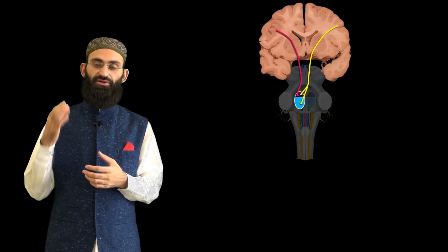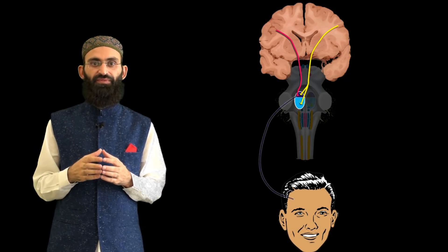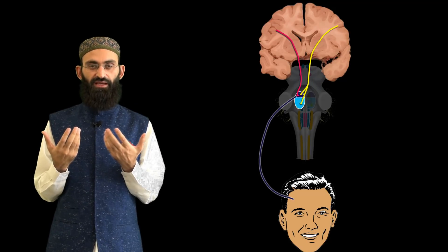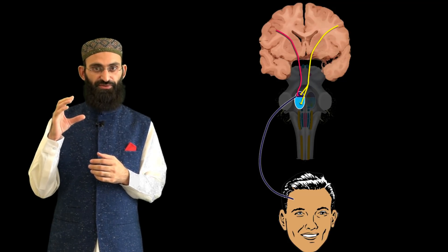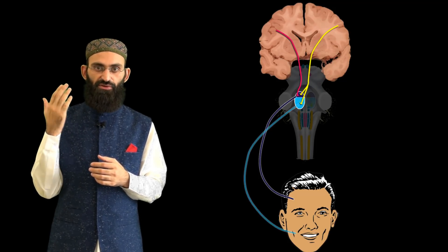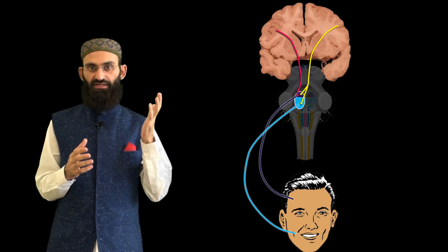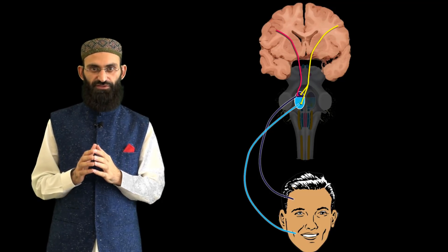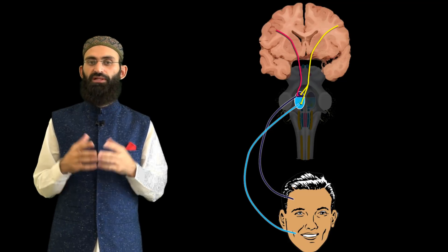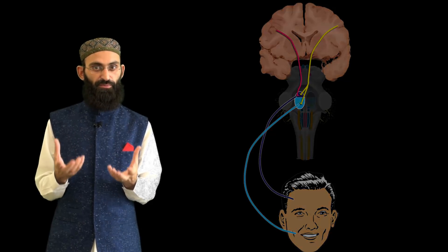Consider the right facial nucleus: the upper part, which innervates the frontalis muscle, gets its corticobulbar supply from both sides. The lower half, which innervates the lower half of the face, gets its innervation only from the left side — so only the left corticobulbar tract innervates the lower half of the facial nucleus. We will shortly discuss the implications of this anatomical phenomenon.